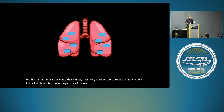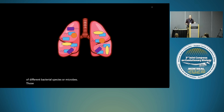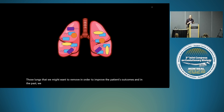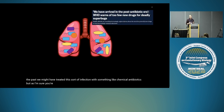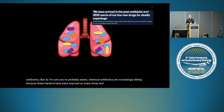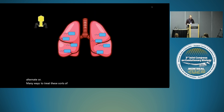The title of this session is co-infection and microbes are rarely found in isolation in nature. More likely there's a whole milieu of different bacterial species in those lungs that we might want to remove in order to improve the patient's outcomes. In the past we might have treated this sort of infection with something like chemical antibiotics, but chemical antibiotics are increasingly failing because these bacteria have been exposed so many times and they're evolving resistance.